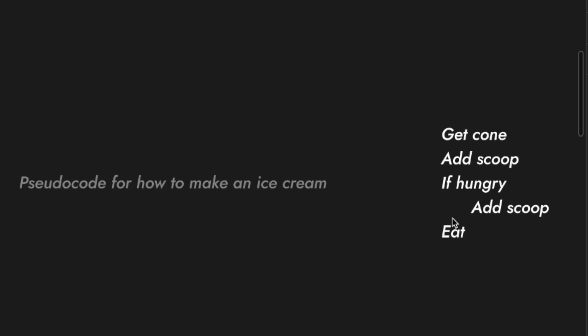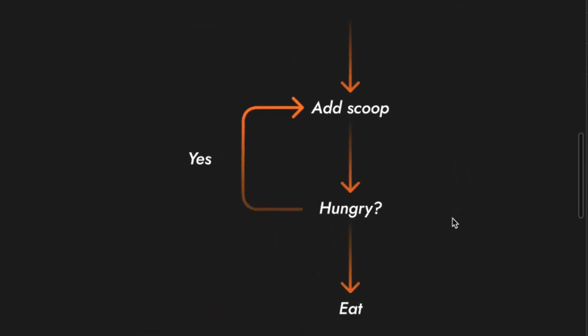We can also visualize an algorithm as a flowchart, something like this. This is the same pseudocode shown diagrammatically. So here's the algorithm again: you get the cone, you add the scoop. If you're hungry, add another scoop. If you're hungry, continue doing that. If not, then eat it.